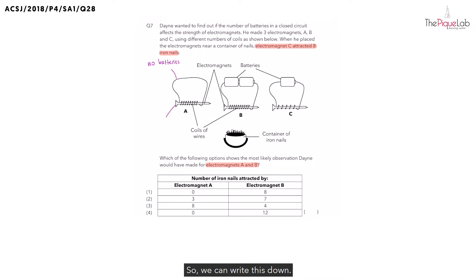No. So we can write this down: it cannot become an electromagnet. And since it is not able to become an electromagnet, would it be able to attract any iron nails? No. It cannot attract iron nails.